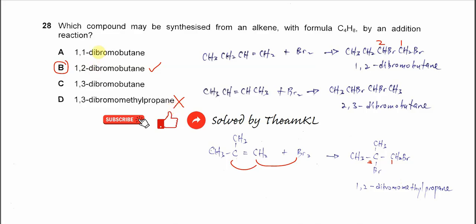So only B is the answer. It will not produce 1,1-dibromobutane, it will not produce 1,3-dibromo-2-methylpropane, it will not produce the last one. Only will produce 1,2-dibromobutane. Okay, that's all. Thank you.